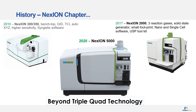During the Nexian generation instruments, new application innovations were released with nano and single-cell capabilities, and software packages supported by the fast scanning capabilities of the Nexian platform. These, along with many other innovations, have kept Perkin Elmer at the forefront of application advances. And now, in 2020, we are proud to add to the Nexian series the Nexian 5000 Multi-Quadrupole ICP-MS.